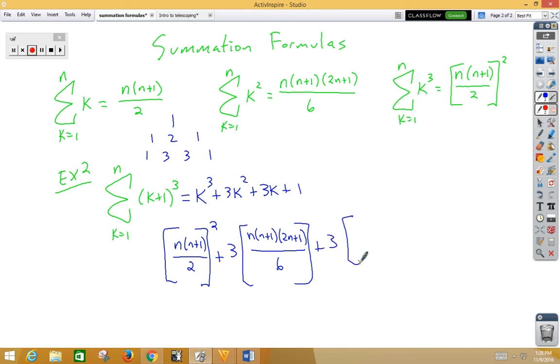3 times k is n times n plus 1, all over 2. And then, our last piece, we've got 1 times the number n, so 1n.